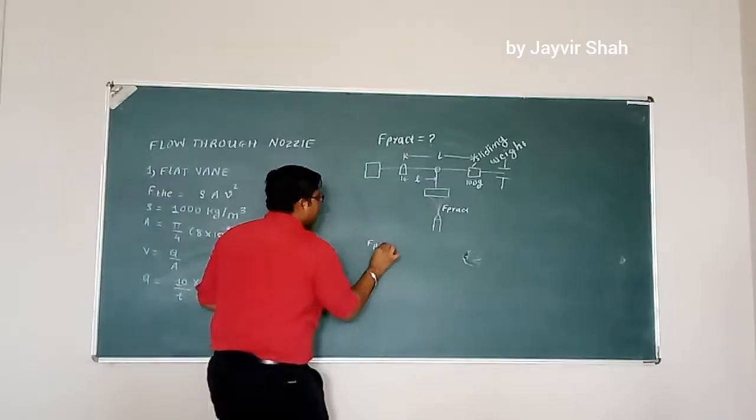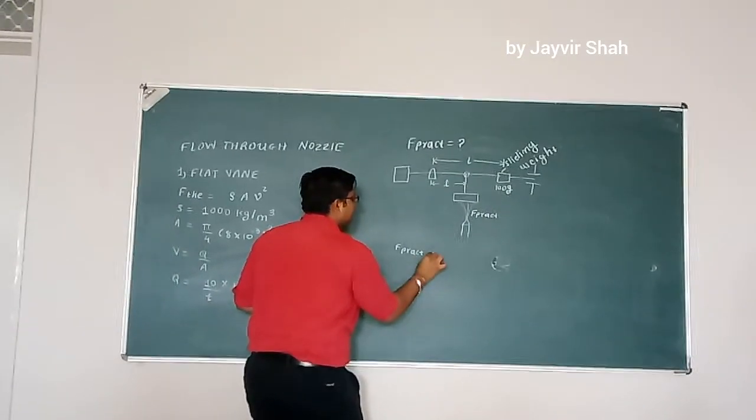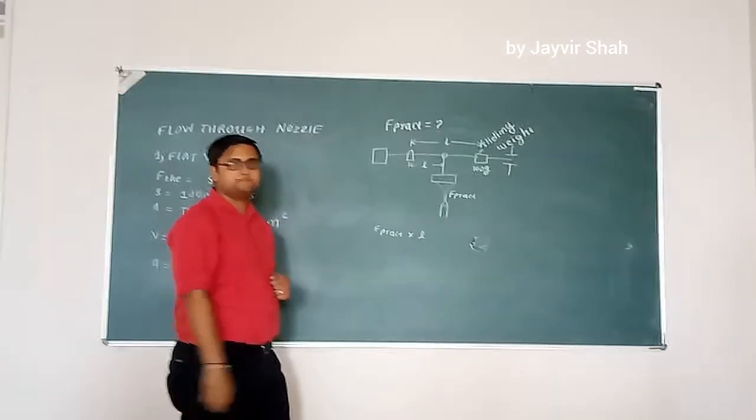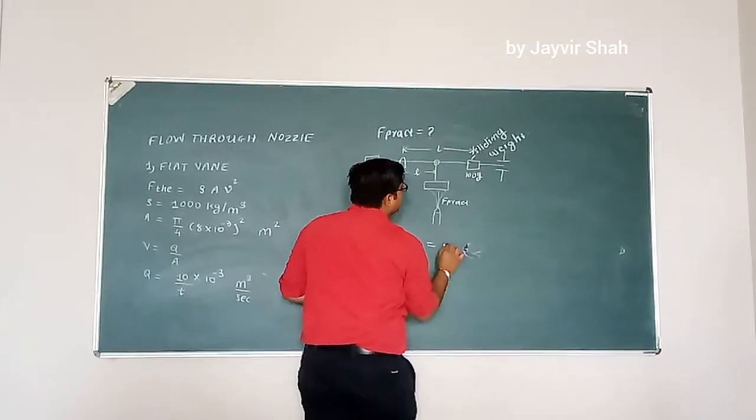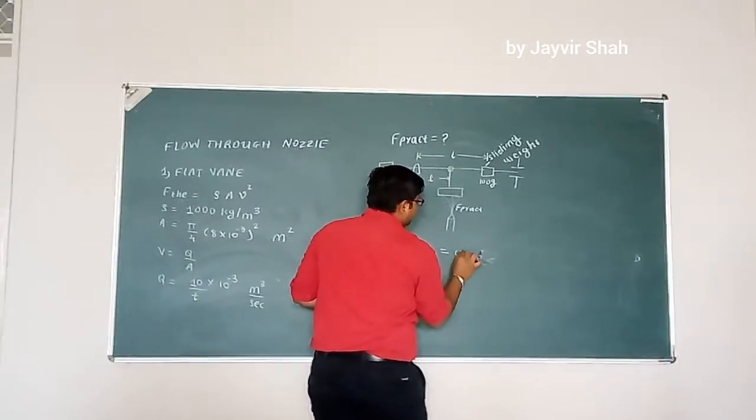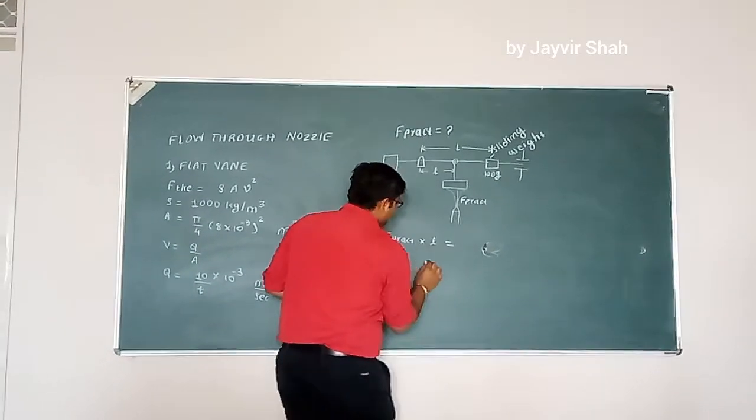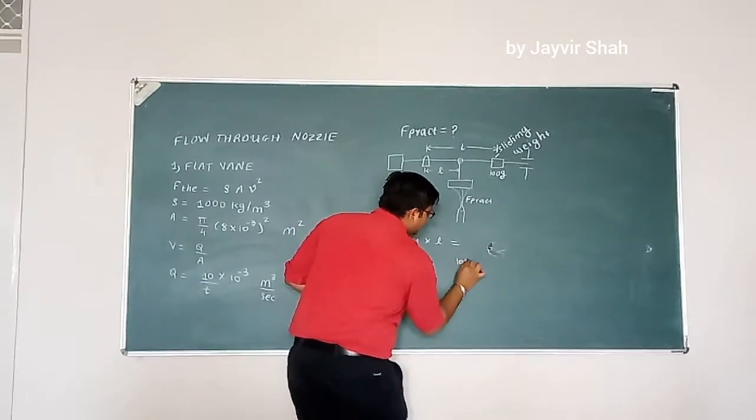So, F practical multiplied by small l is equal to 100 grams multiplied by 10⁻³ in order to transfer gram into kilogram.